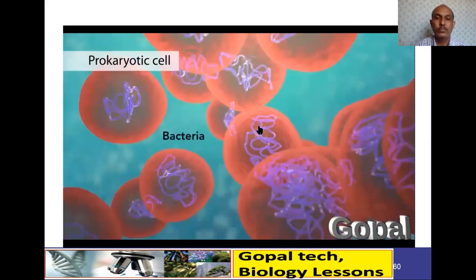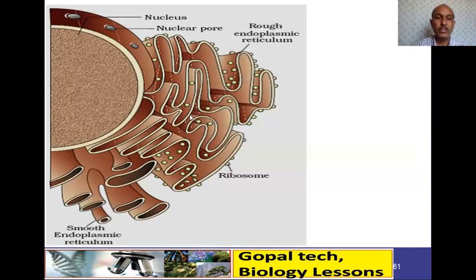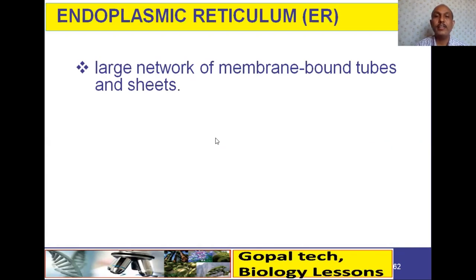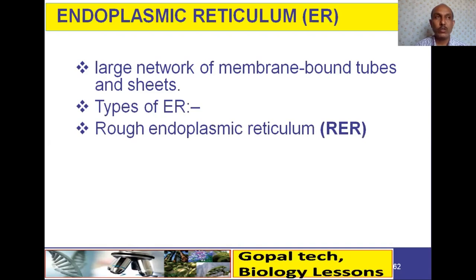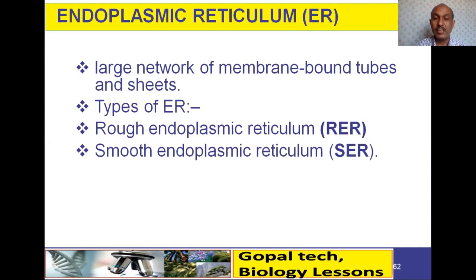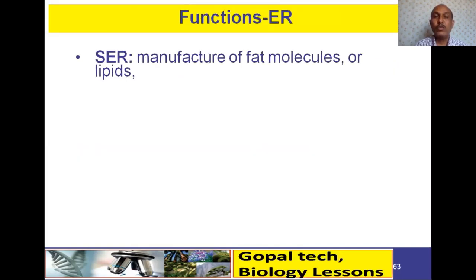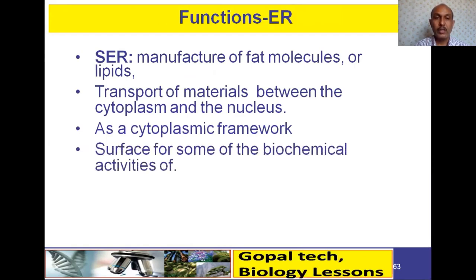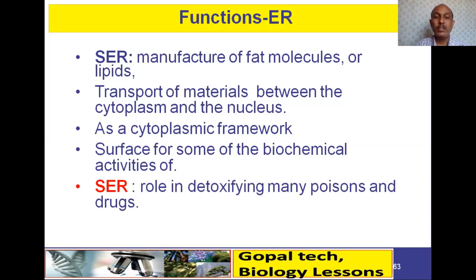The endoplasmic reticulum develops from the outer membrane of the nucleus. Rough endoplasmic reticulum (RER) has ribosomes attached; smooth endoplasmic reticulum (SER) is free from ribosomes. It is a large network of membrane-bound tubes and sheets. SER manufactures fat molecules or lipids; RER transports materials between the cytoplasm and nucleus. It also acts as a cytoplasmic framework and helps in detoxifying many poisons and drugs.